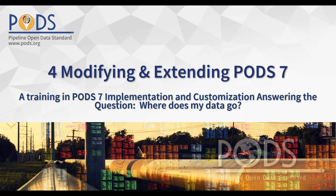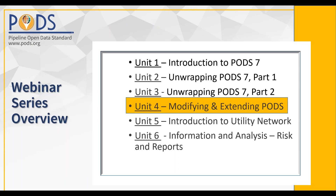This is technically called Unit 4, Modifying and Extending Pod 7. But really, what its purpose is, is to answer the question: where does my data go? I am contemplating a Pod 7 implementation and I need to understand how am I going to map my data over — what is it that's going to help me get to where I need to be with Pod 7? That's really what this topic is about. We are in Unit 4. As I mentioned, we have two more units left.